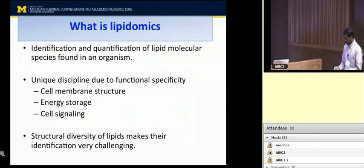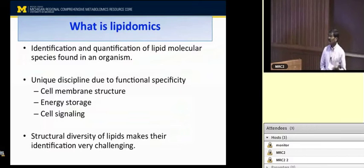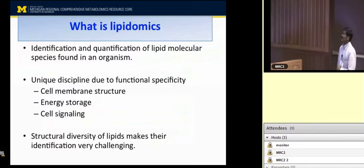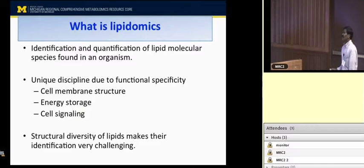First, let us see what is lipidomics. Lipidomics is the identification and quantification of thousands of cellular molecular lipid species found in an organism. Lipidomics is a distinct discipline due to the uniqueness and functional specificity of lipids relative to other metabolites. Lipids have key biological functions such as acting as structural components of cell membranes, serving as energy sources, and participating in cell signaling. Identification of lipids is very challenging, exciting, and interesting due to the structural diversity of lipids.